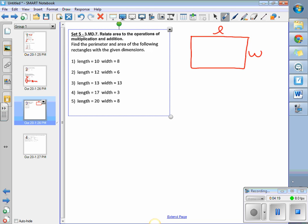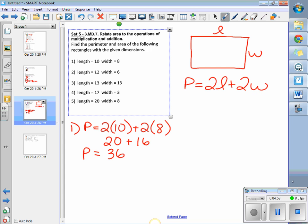For perimeter, perimeter is 2 lengths, because we're going all the way around. It's like doing a fence. And 2 widths. So for number 1, perimeter, we're going to have 2 times 10 plus 2 times 8. So this is going to give us 20 plus 16, which is going to give us 36. And perimeter is measured in units.